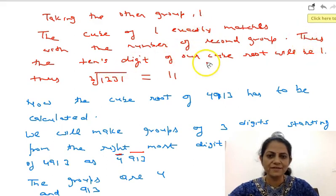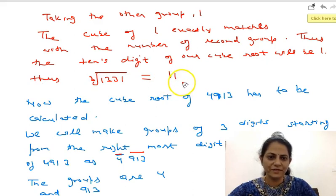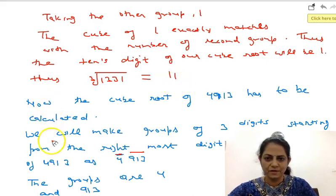Thus, the tenth digit of our cube root will be 1. Therefore, cube root of 1331 is 11.